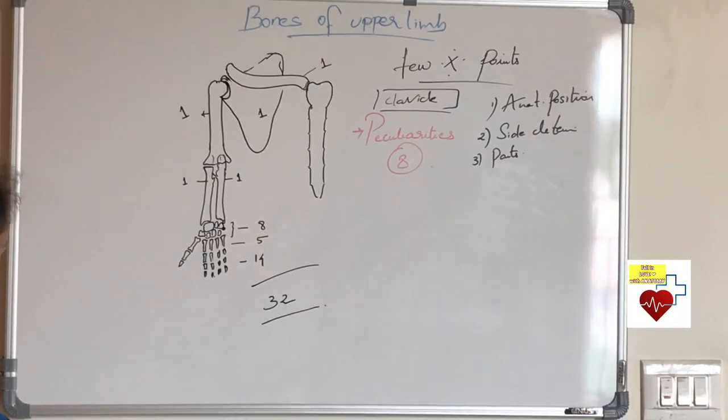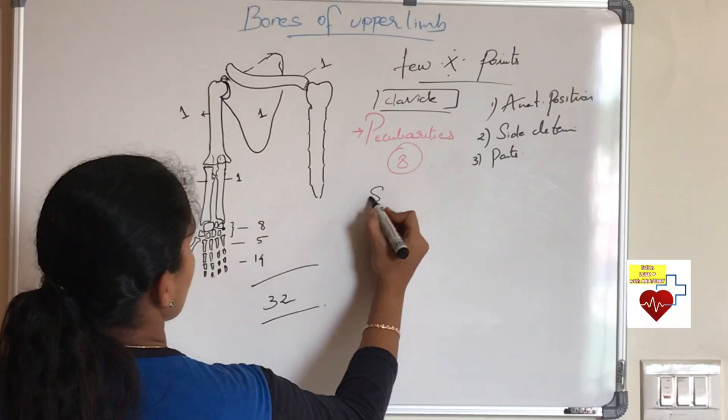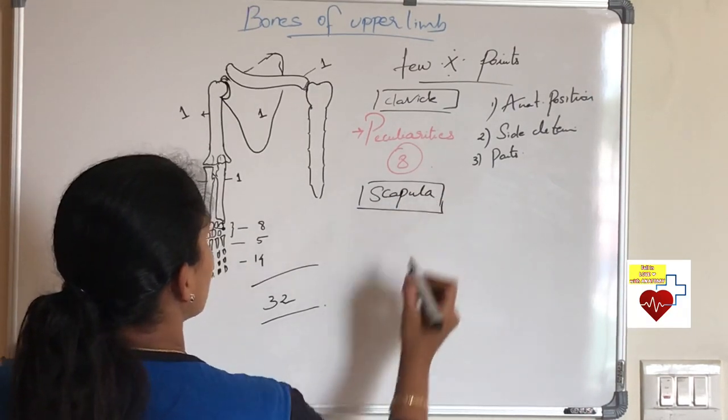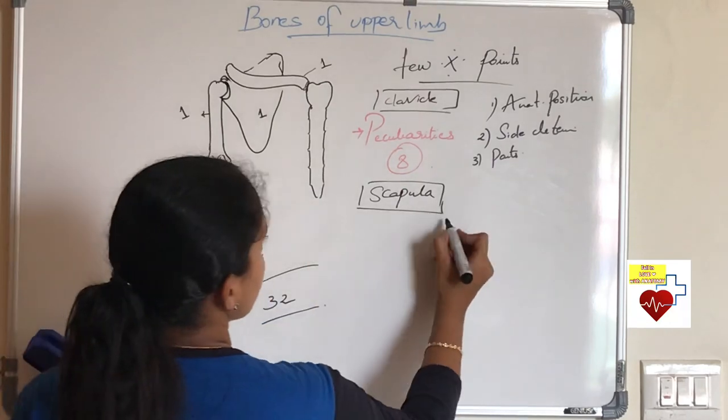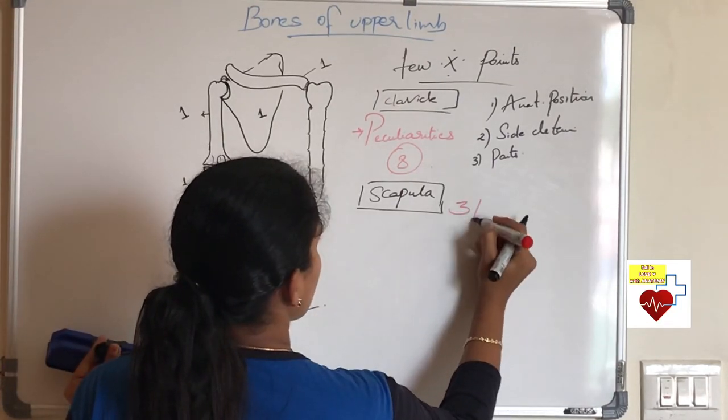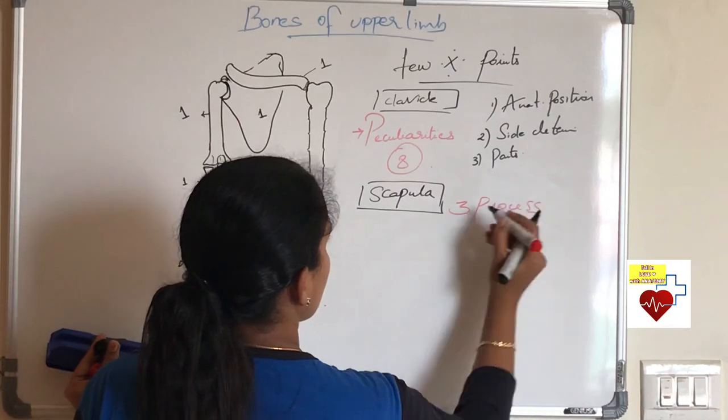In clavicle, apart from its anatomical position, muscle attachment, side determination, you should know about peculiarities, which is how it differs from other bones. Almost you have eight peculiarities. Please know the peculiarities of clavicle.